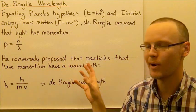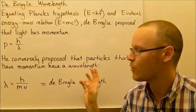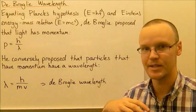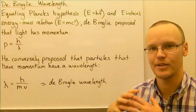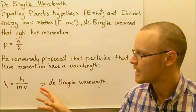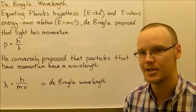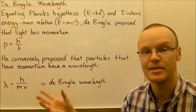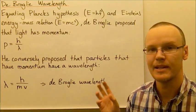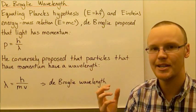He also conversely proposed that particles that have momentum have a wavelength. Any particle that has a wavelength, whether it is an electron or a collection of particles, has a wavelength that may or may not be measured depending on its mass and velocity. Recall that momentum is mass times velocity, so λ = h/mv is the de Broglie wavelength.